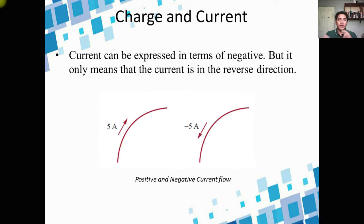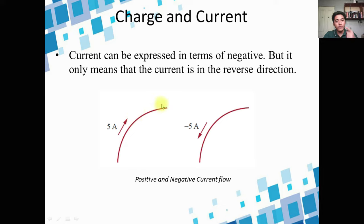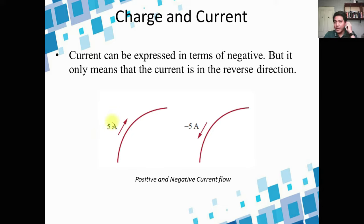Current can be expressed as a negative value. If current has a negative value, it only means the current reversed its direction — for example, if we have 5 amperes going in one direction and we negate it, the direction of the current changes. Current is a scalar quantity.